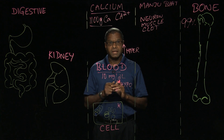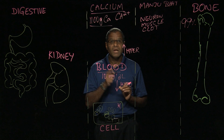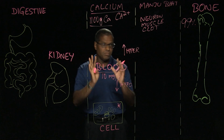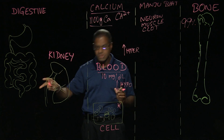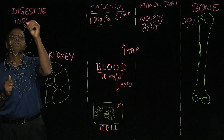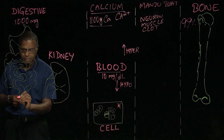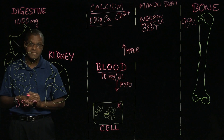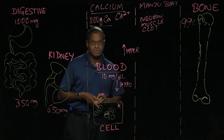Now let's say we have hypocalcemia — how do we increase calcium? We can think of this as compartments: the blood, the cell, the bone, and what we consume. We consume on average about 1000 milligrams of calcium every day. We also lose about 350 milligrams of calcium through feces and about 650 milligrams through urine.